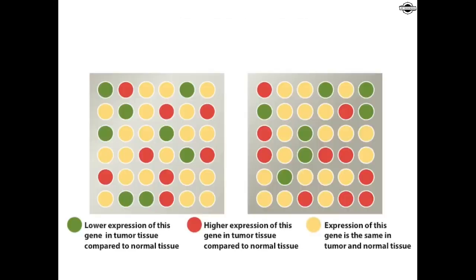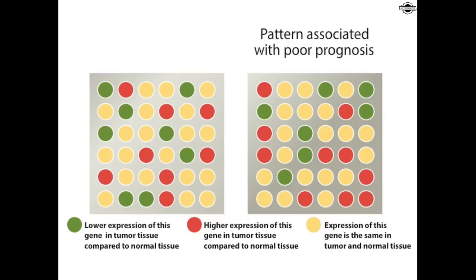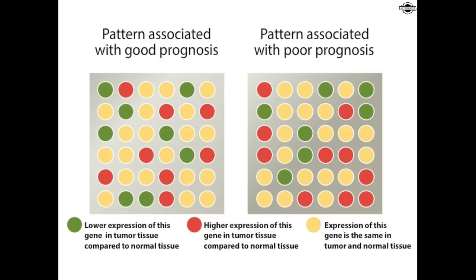For breast cancer, scientists have identified 70 genes whose expression differs dramatically between tumors from patients whose cancers have recurred and tumors from patients whose cancers did not recur. From this information, gene expression signatures have been identified that are useful in clinical decision-making. Patients with a good prognosis can avoid unnecessary chemotherapy, whereas those with a poor prognosis can receive more aggressive treatment.